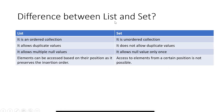What is the difference between List and Set? List is an ordered collection or interface while Set is an unordered collection. List allows multiple null values while Set allows only one null value. Elements can be accessed based on their position in List as it maintains insertion order, while in Set there is no insertion order — it does not maintain any order.